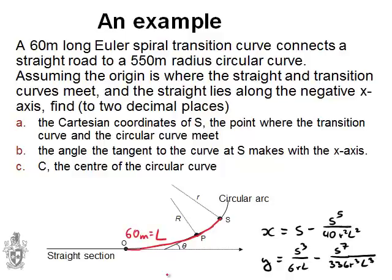Now, the circular curve has a radius of 550 meters and little r is the radius of the circular curve or circular arc. So, that's 550 meters. What are we supposed to do?